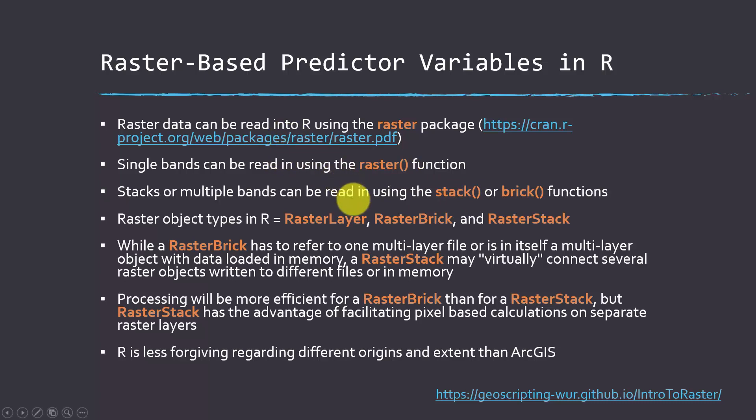Brick only works on a, it has to be referenced to a single object, whereas a stack can reference multiple files or even a subset of bands from one file. If you are just working with a single object, it's generally a good idea to read it as a brick, as that should be computationally more efficient than reading it as a stack. If it's coming in from multiple files or a subset of a file, you're going to probably have to use a stack. I still like to do a lot of my pre-processing outside of R in a GIS environment, like using ArcGIS. So I tend to produce my predictive variables and stack them and whatnot in ArcGIS as opposed to R, but that's really just personal preference.